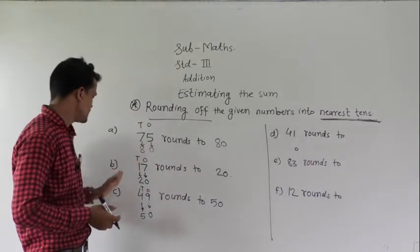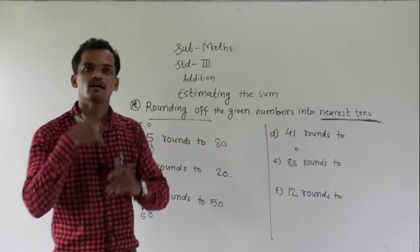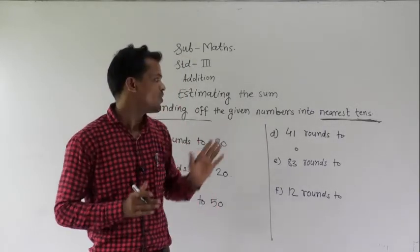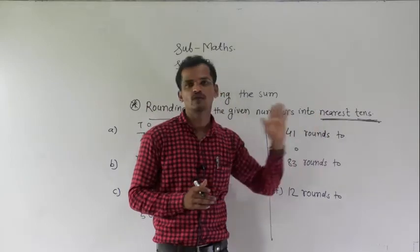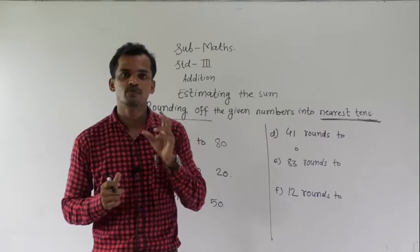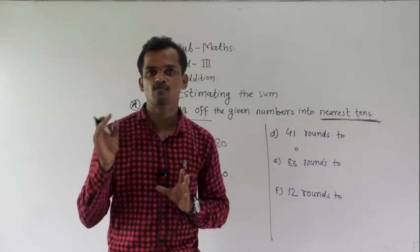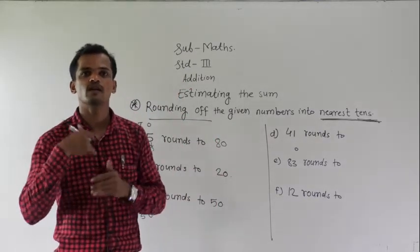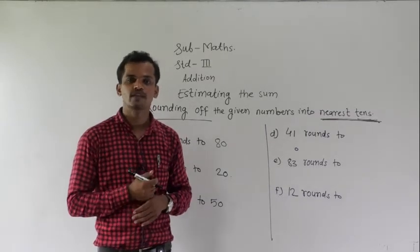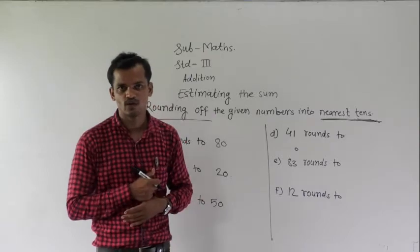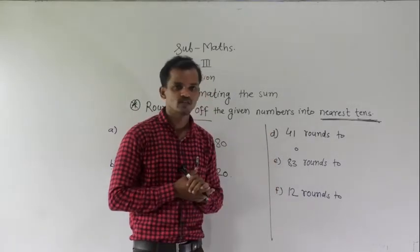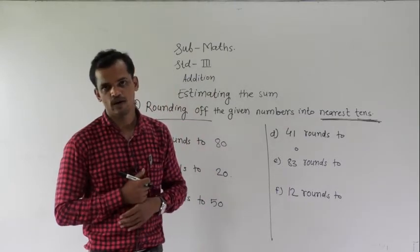These examples A, B, and C are based on rounding up. Now we will see rounding down. While rounding a given number to the nearest 10, if the ones place digit is smaller than 5, the number will be rounded down.